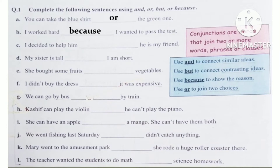Part C is: I decided to help him __ he is my friend. The second part again gives the reason, so we join these two parts using the conjunction BECAUSE. Answer: I decided to help him because he is my friend.